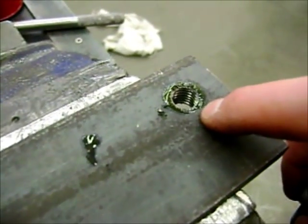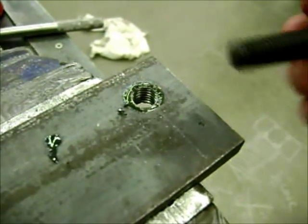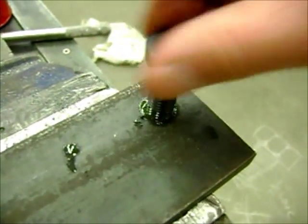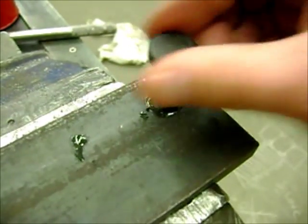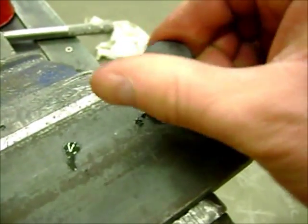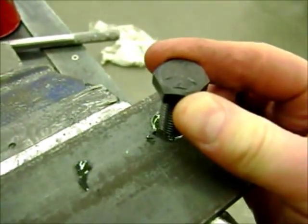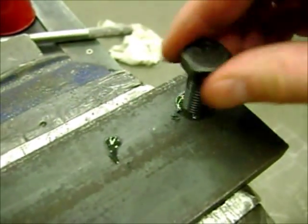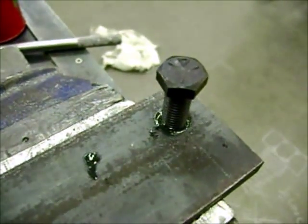Now with the hole drilled to the proper size, tapped with the right tap, this half inch coarse thread should fit right in there just beautifully. And because we used the right sized tap, this is not going to have very much rock at all. It will have a nice, good fit, and be perfectly dandy.